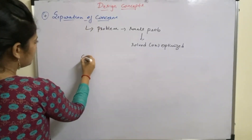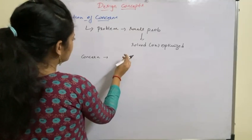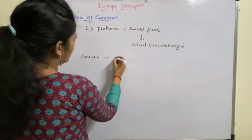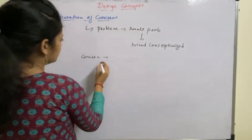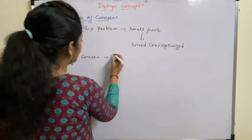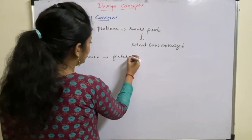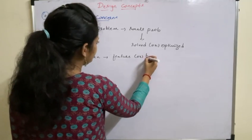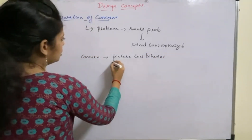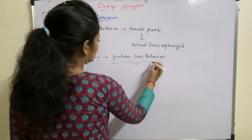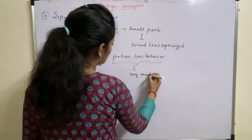So what is meant by concern here? A concern is nothing but a feature or behavior that is specified as a part of the requirements model of the software.